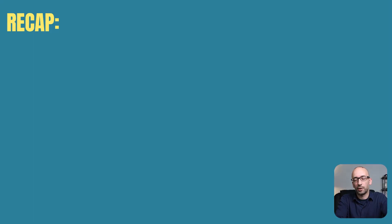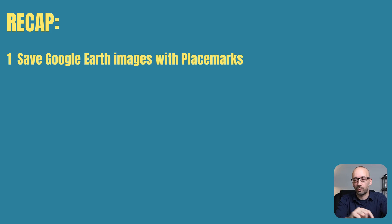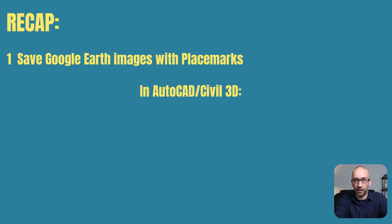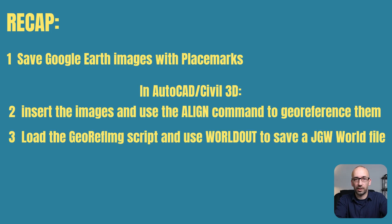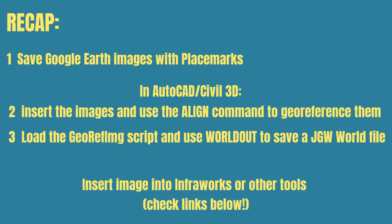Let's do a quick recap. Use Google Earth to find your points and save images that show the point coordinates as annotations. In AutoCAD or Civil 3D, insert the image and use the Align command to orient and scale the picture. Then use the georef image script with the World Out command to generate a world file for your image. You can then reuse these images in different applications like AutoCAD or Revit — links will be in the description.